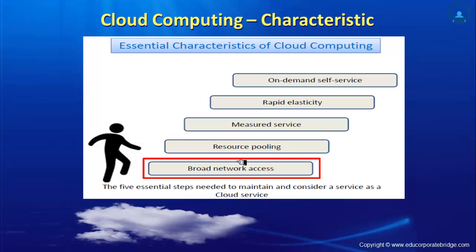Next is broad network access: anywhere, any place, anytime, any device that can access the internet can reach your data — that is only possible in cloud. You are not limited to accessing data only when you are at the office; you can access it from home, from a client's place, or out of station. All these characteristics remove barriers like cost, IT support dependency, IT infrastructure cost, recurring cost, CAPEX, and OPEX, and they increase the effective use of IT resources. This is why cloud computing has day by day become the most effective solution in the IT industry.